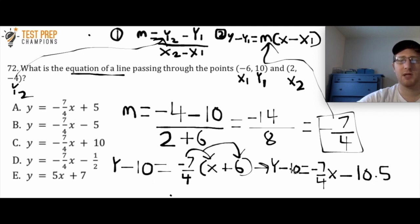So the last step here would be to take this y minus 10. I want to add 10 to both sides of my equation. All right. So if I do that, if I do -10.5 plus 10, I'm going to be left with 0.5, which is equal to half.